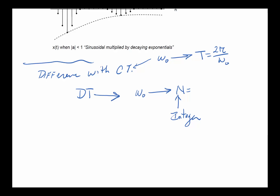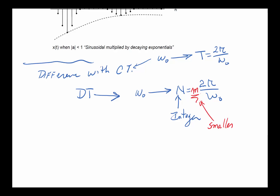The relationship is similar to N = 2π/ω₀, but we introduce an integer m. We define m as the smallest integer such that N = m·(2π/ω₀) gives an integer value of N. We always have to watch that n must be an integer.